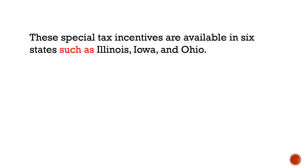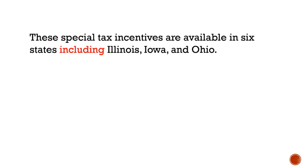For example, in our previous sentence, if I write 'these special tax incentives are available in six states such as,' the writer is just giving a random sample of the states. Whereas if the writer uses 'including,' it highlights the most important ones. Does the writer want to highlight the important ones or just give a random sample as in this example?